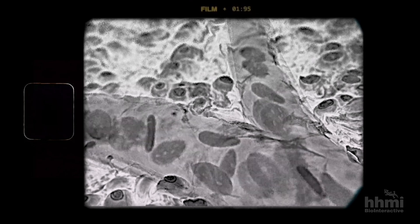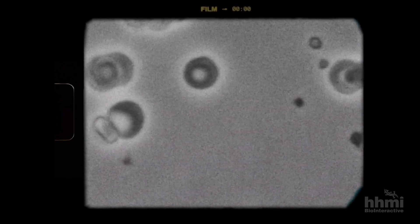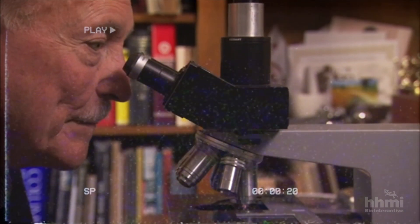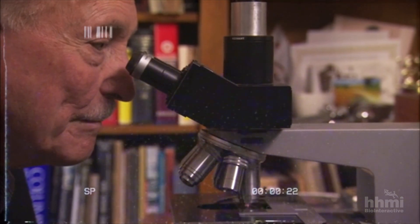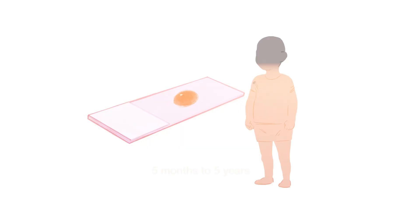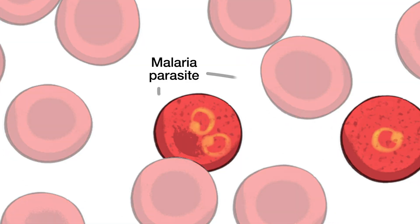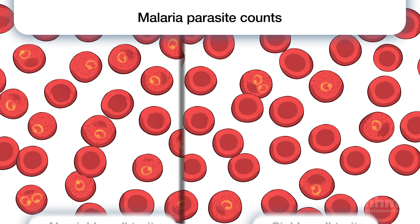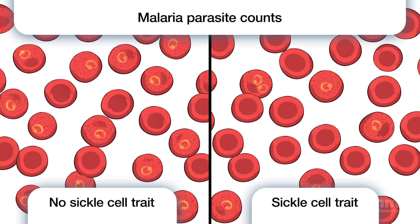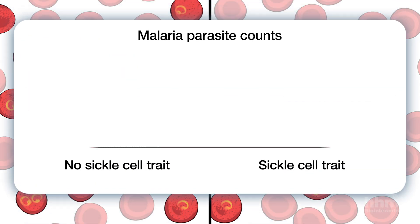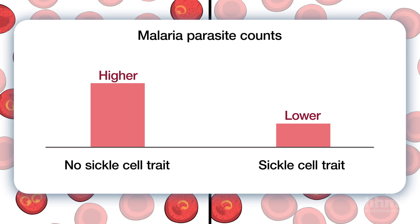Tony wondered if having a sickle cell allele offered an advantage to people living in areas with malaria. To test this, he looked at malaria in children aged 5 months to 5 years, collecting blood samples and counting the number of malaria parasites in each sample. He then compared parasite counts in children with sickle cell trait to those without. Children with sickle cell trait had lower parasite counts — the strongest evidence yet that sickle cell trait gave heterozygotes an advantage where malaria was present.